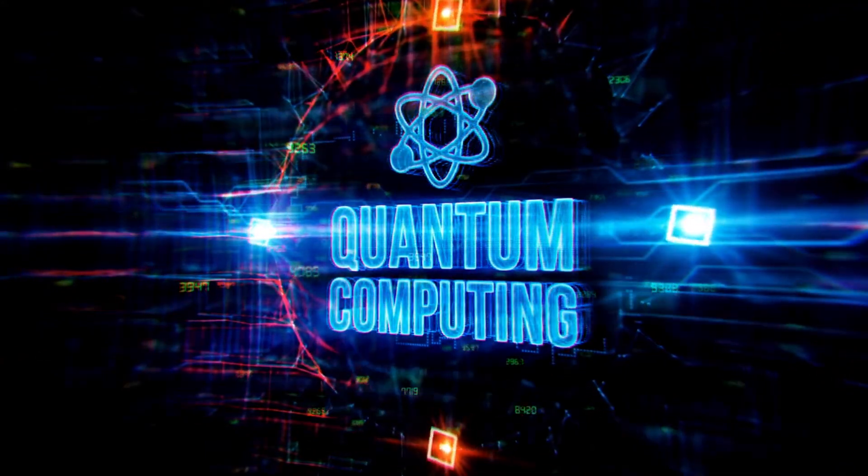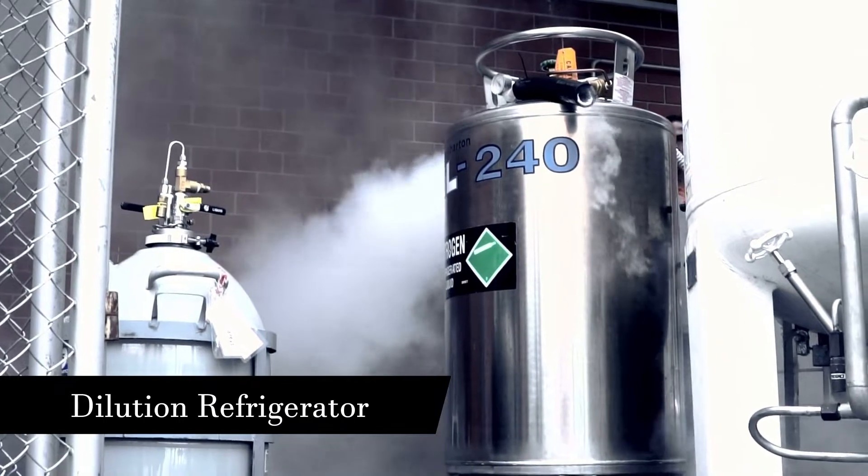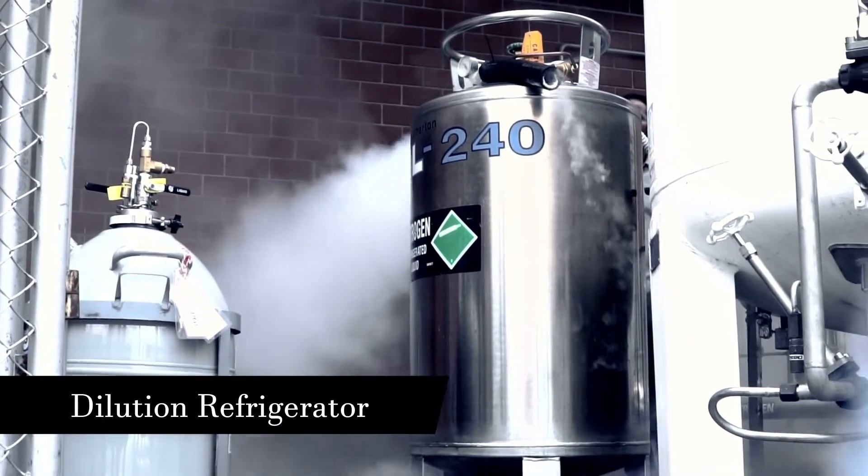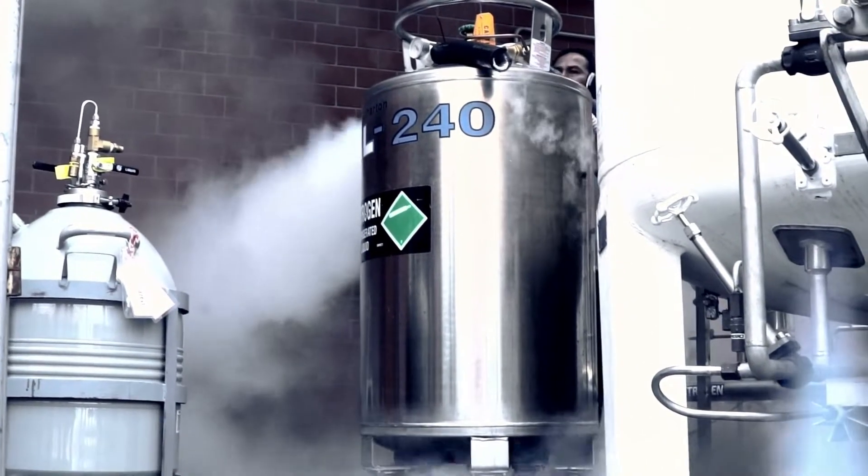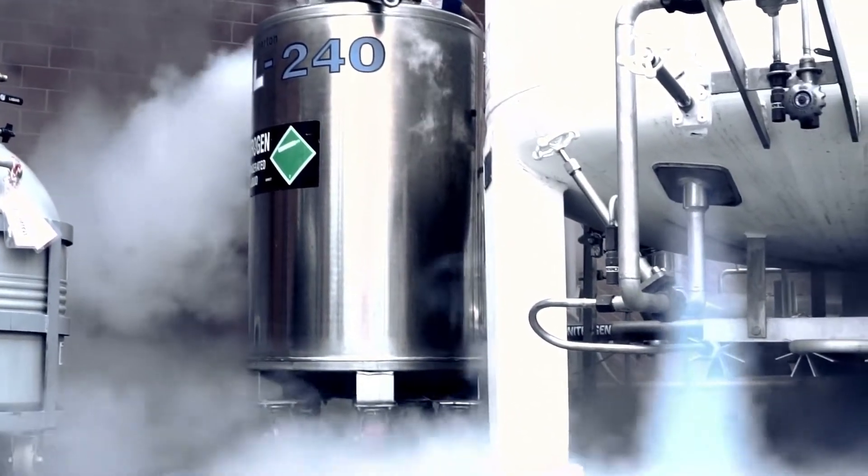Now let's look at five key terms in the space: dilution refrigerator, superposition, entanglement, interference, and quantum supremacy. A dilution refrigerator is used to cool quantum chips, so the chips are cold enough to create the quantum properties of superposition and entanglement.